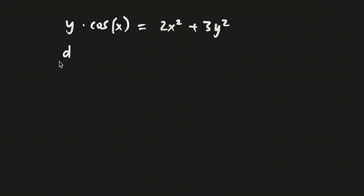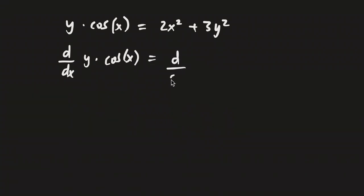In order to use implicit differentiation to solve this, I need to first find d by dx of both sides. So this is going to become d by dx of y times cosine of x equals d by dx of 2x squared plus 3y squared.